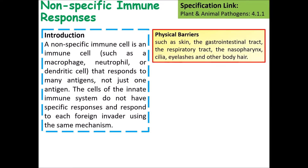There are some ways that the body will stop itself becoming infected, so physical barriers such as the skin, gastrointestinal tract, respiratory tract, and eyelashes will all trap pathogens and destroy them.